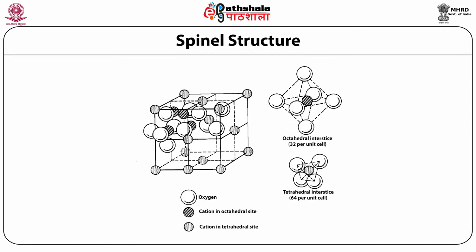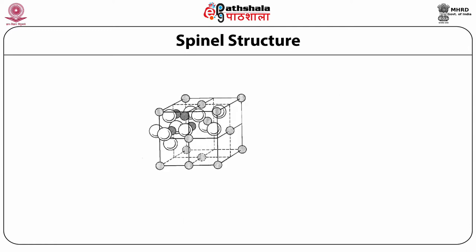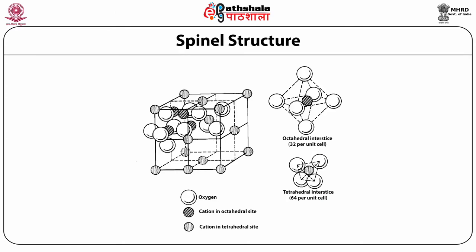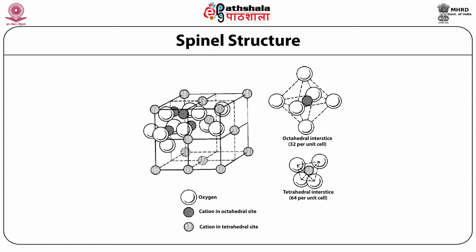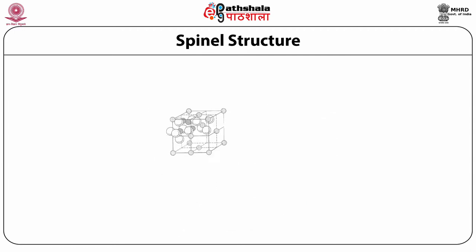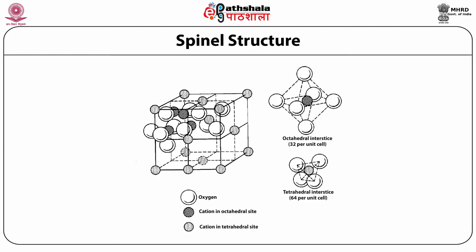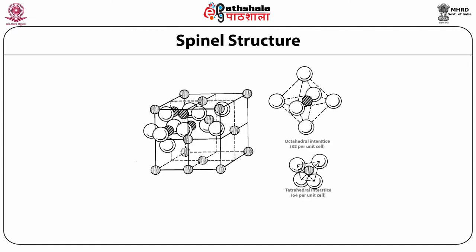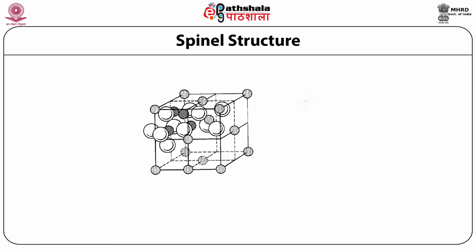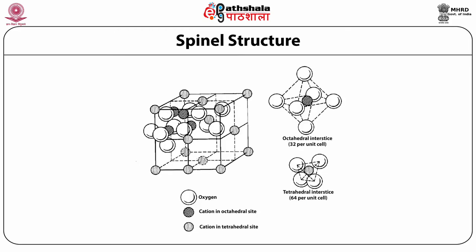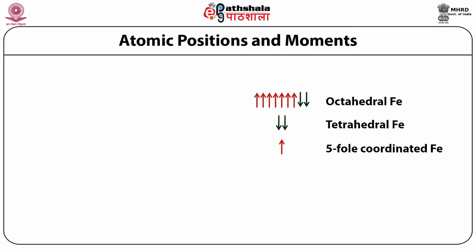Here, a general spinel structure has been shown. The bigger circles represent oxygen atoms, the shaded ones represent cations in octahedral sites, and the dotted ones represent cations in tetrahedral sites. The octahedral interstices number 32 per unit cell, while the tetrahedral interstices number 64 per unit cell.